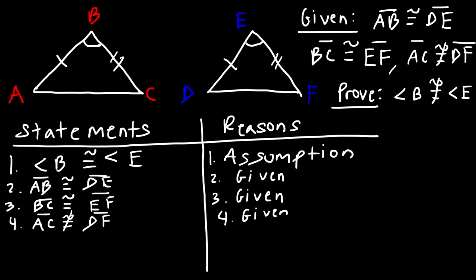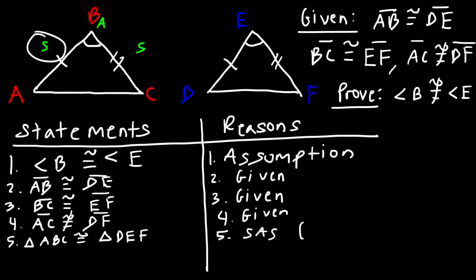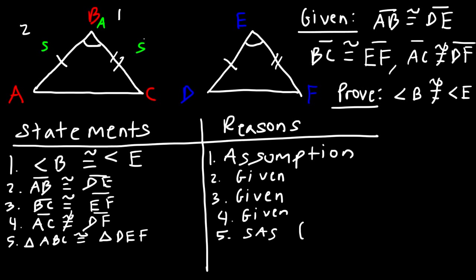Notice that we can prove that triangle ABC is congruent to triangle DEF based on the Side-Angle-Side postulate. For the SAS postulate: AB is congruent to DE from statement two, angle B is congruent to angle E from statement one, and BC is congruent to EF from statement three — side, angle, side based on statements two, one, and three.